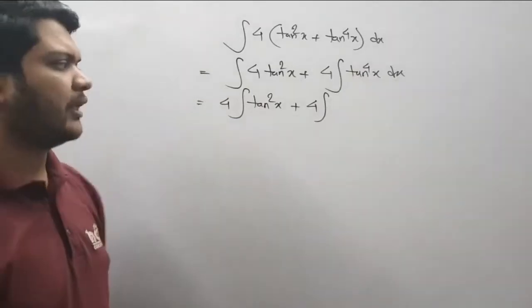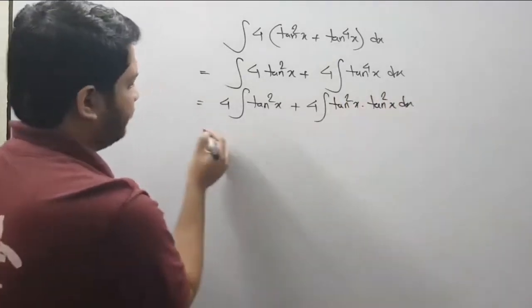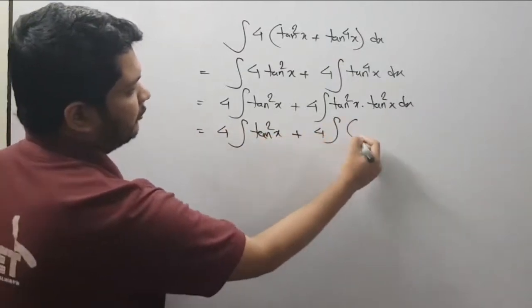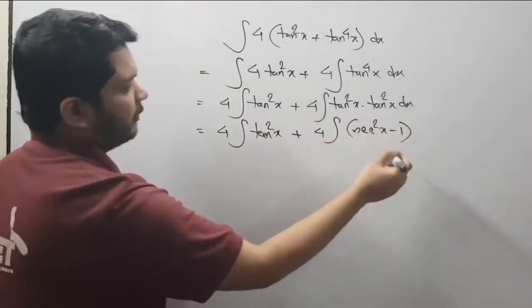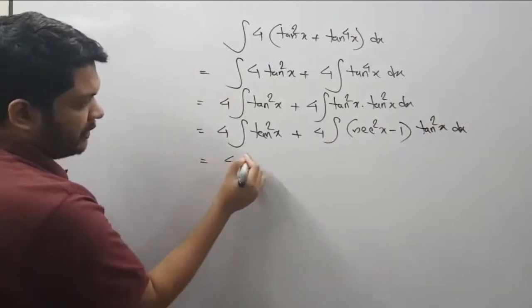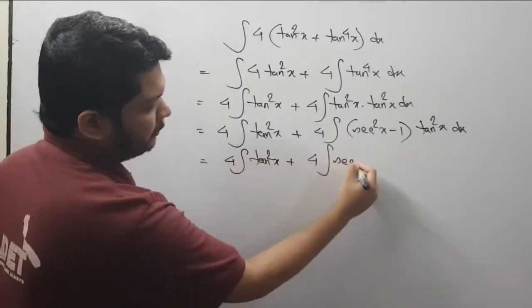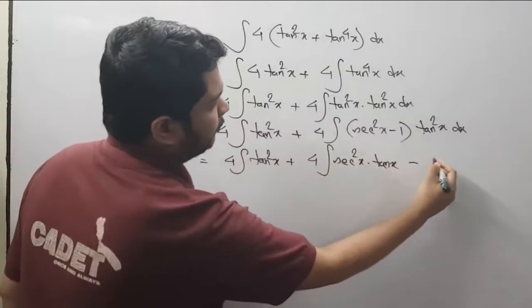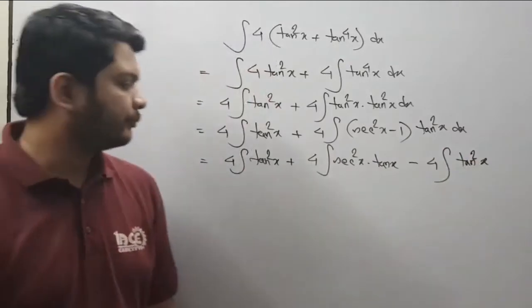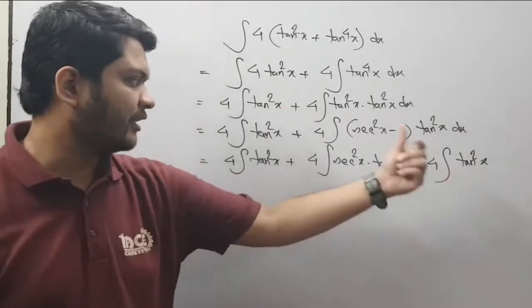4x times 10 square x dx. So, 4 times integration of 10 square x plus 4 times integration of second square x minus 1 into 10 square x dx. That's 4 times integration of 10 square x plus 4 times integration second square x into 10x minus 4 times integration of 10 square x. The integration is 4 times 10 square x plus 4 times integration of 10 square x minus.